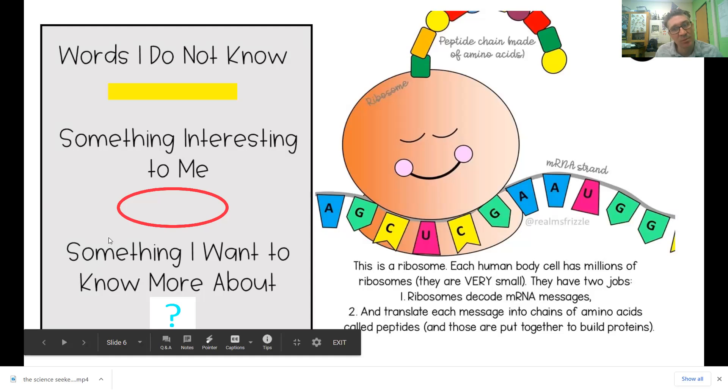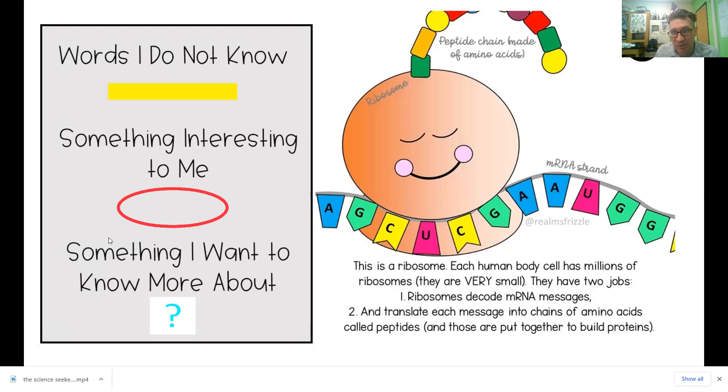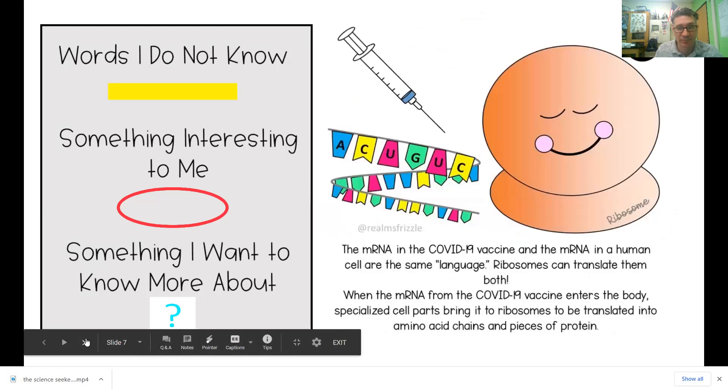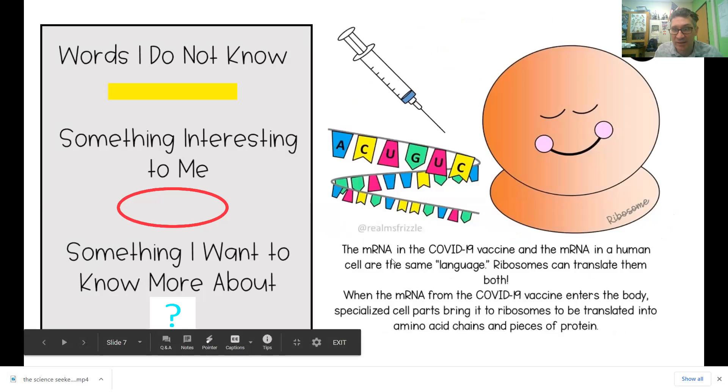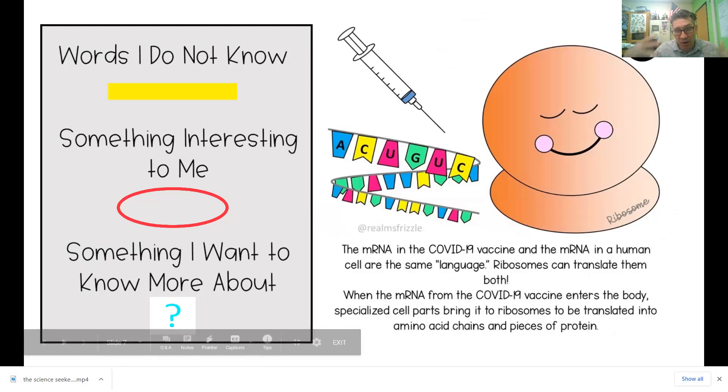This is a ribosome. Each human body cell has millions of ribosomes. They have two jobs. They decode mRNA messages and translate messages into chains of amino acids and peptides. Those are what make and build your proteins. Now, mRNA in COVID-19 vaccine and mRNA in their cells, they speak the same language. So ribosomes can translate both.